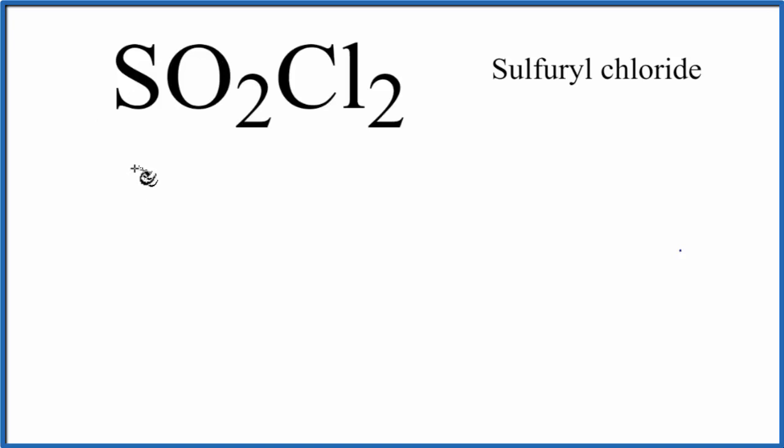So for sulfur, on the periodic table, we have six. Oxygen, we have six, but we have two oxygens, plus chlorine, we have seven for chlorine, we have two chlorine atoms. That gives us 32 total valence electrons for the SO2Cl2 Lewis structure.